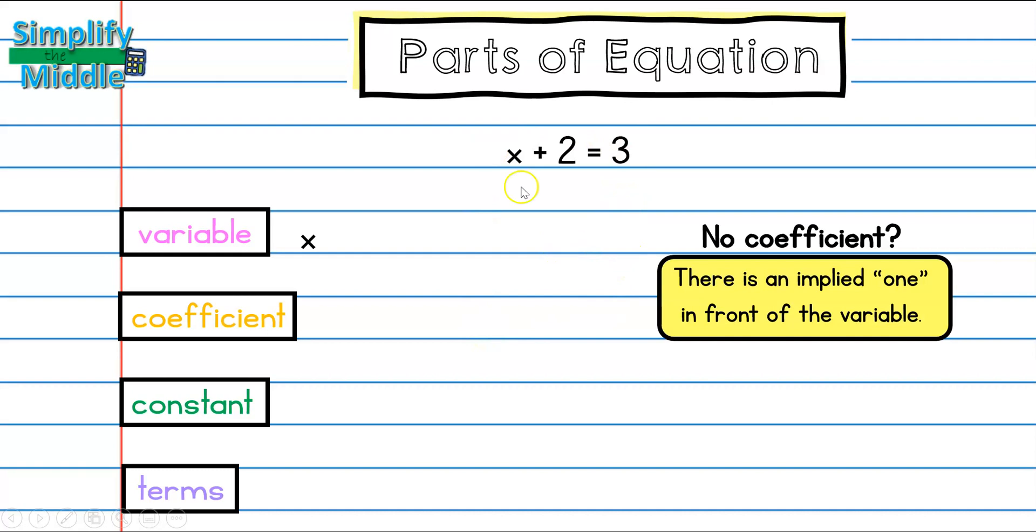So for our coefficient for this problem, because there's no number in front of the variable, the coefficient must be 1. Next I'm going to look at my constants. I have two constants in this equation, 2 and 3.